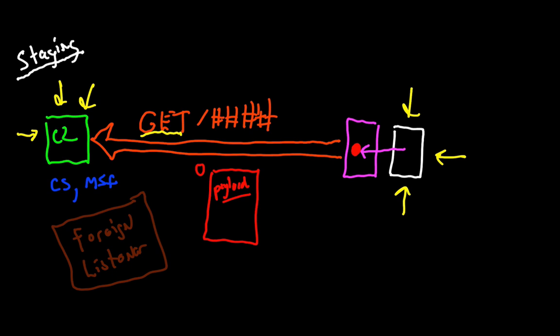The three big takeaways are: staging is what allows us to use a Metasploit framework exploit to deliver a Cobalt Strike beacon payload; it is also what allows us to pass sessions to Metasploit; but because there is a predictable way to download a Cobalt Strike payload, it also creates a big OPSEC concern. We'll talk about that in the next lecture when we discuss Team Server OPSEC.